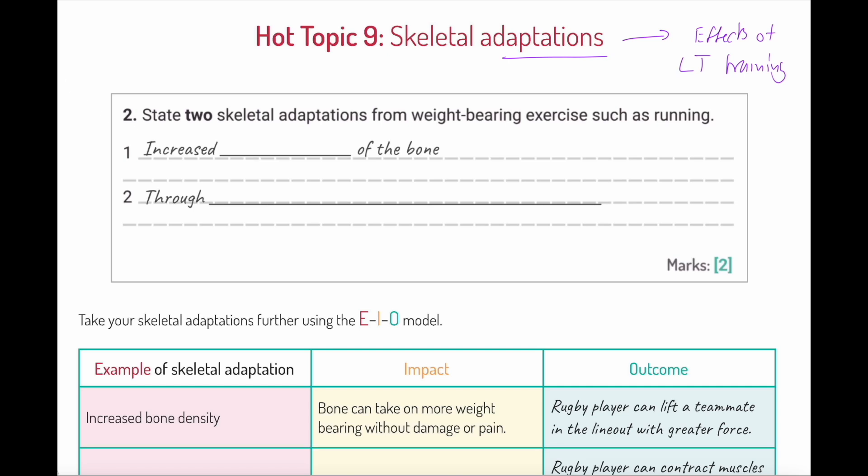We've got a question here which is asking us to state two skeletal adaptations. Notice the importance of that word. Obviously we're looking at skeletal adaptation, but this could be cardiovascular, this could be respiratory. State two skeletal adaptations from weight-bearing exercise such as running. Well, we'd expect increased strength of the bone, but one of the terms I'm going to encourage you to incorporate is tensile strength.